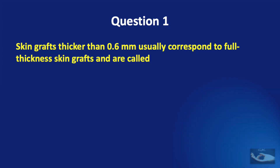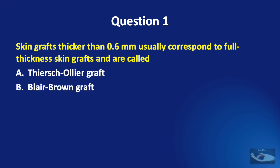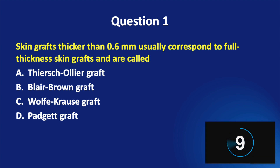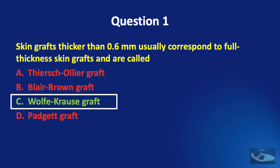Question number 1. Skin grafts thicker than 0.6 mm usually correspond to full thickness skin grafts and are called: Thiersch-Aulier graft, Blair-Brown graft, Wolf-Cross graft, or Padgett graft. The correct answer is the Wolf-Cross graft.